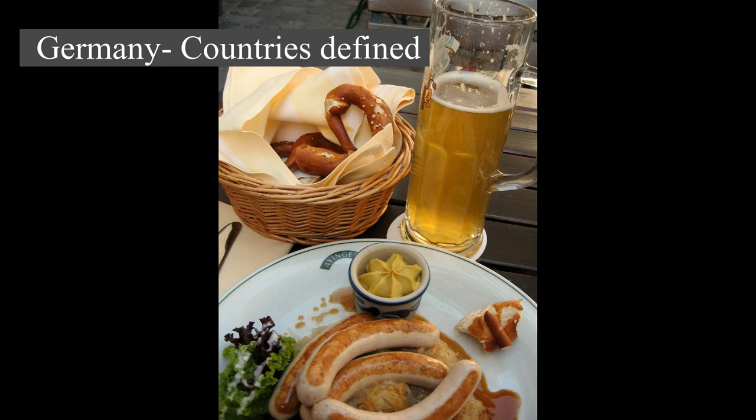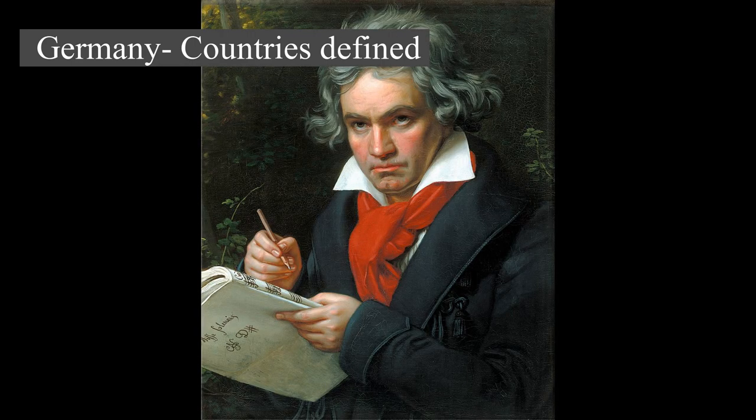Germany is situated between the Baltic and North Seas to the north and the Alps to the south. It covers an area of 357,022 square kilometers with a population of almost 84 million within its 16 constituent states.